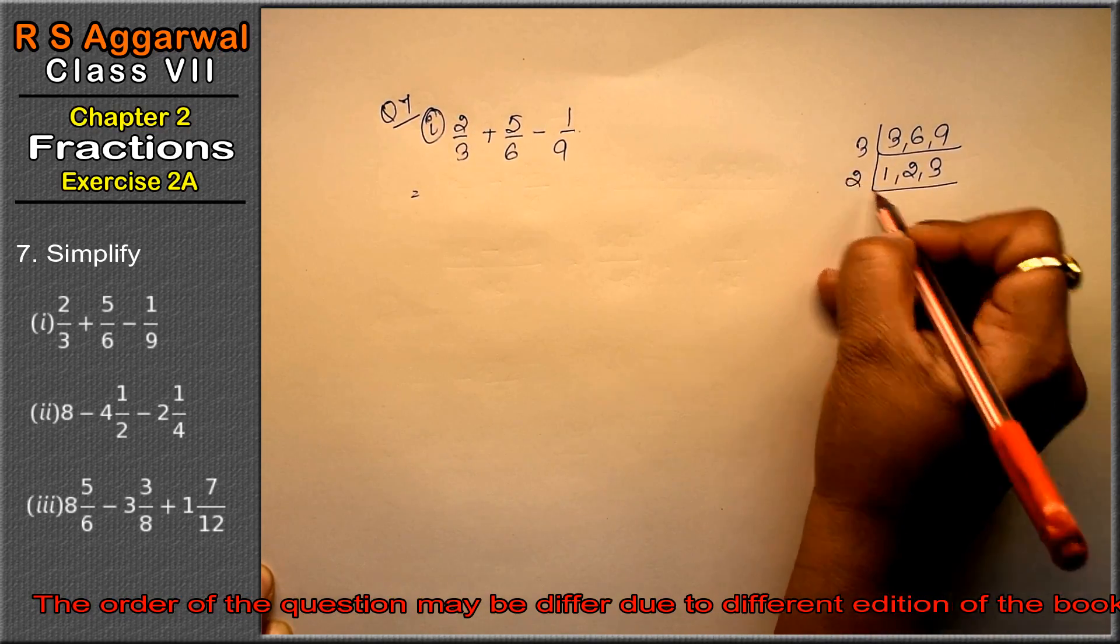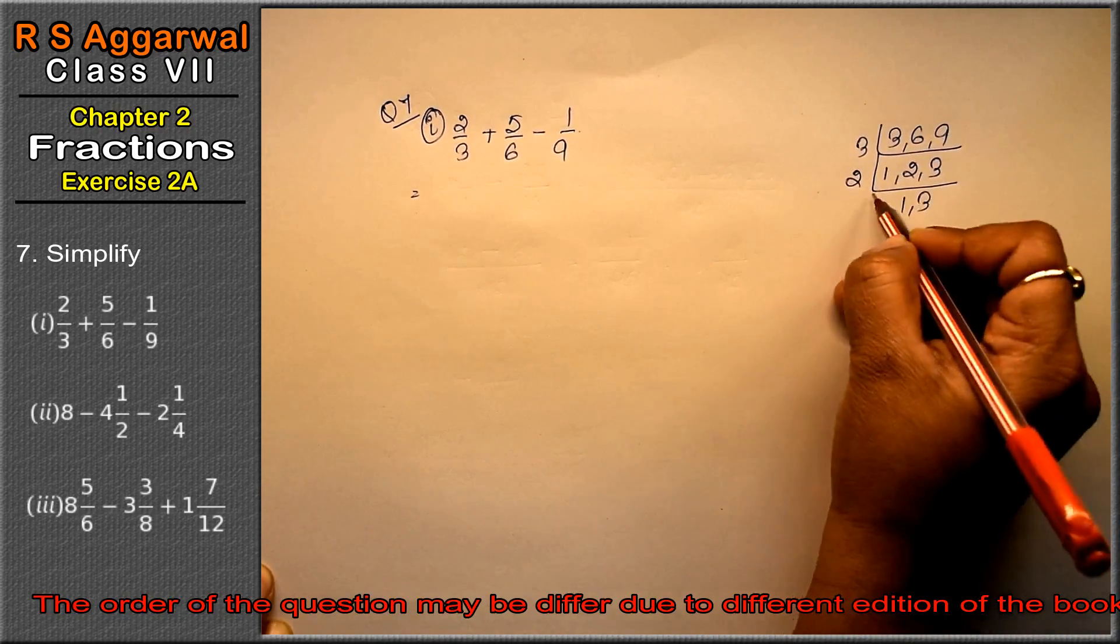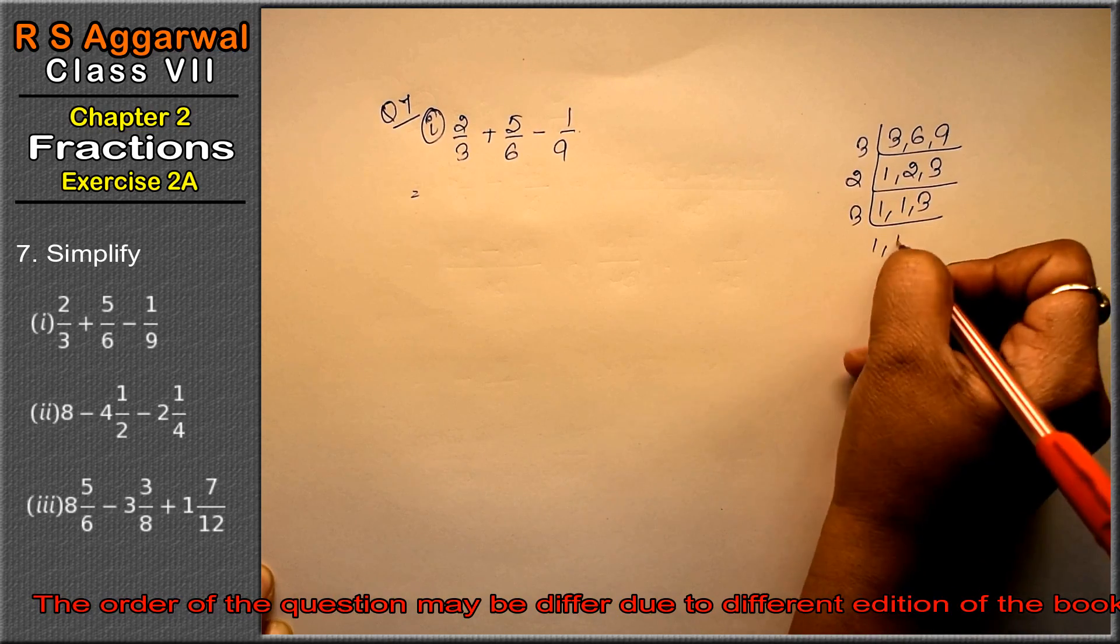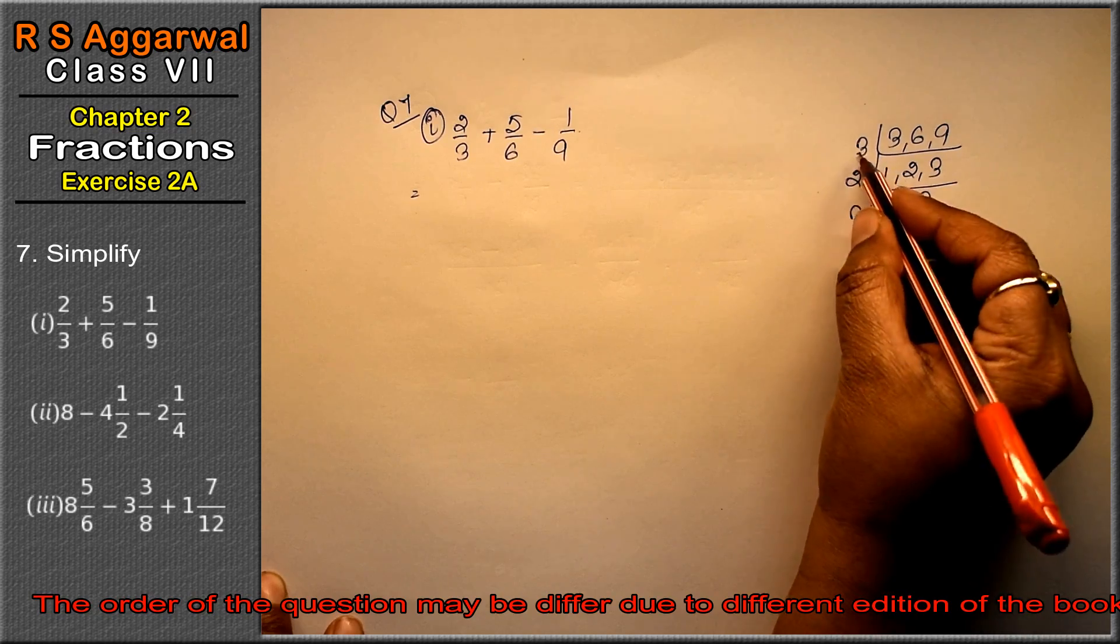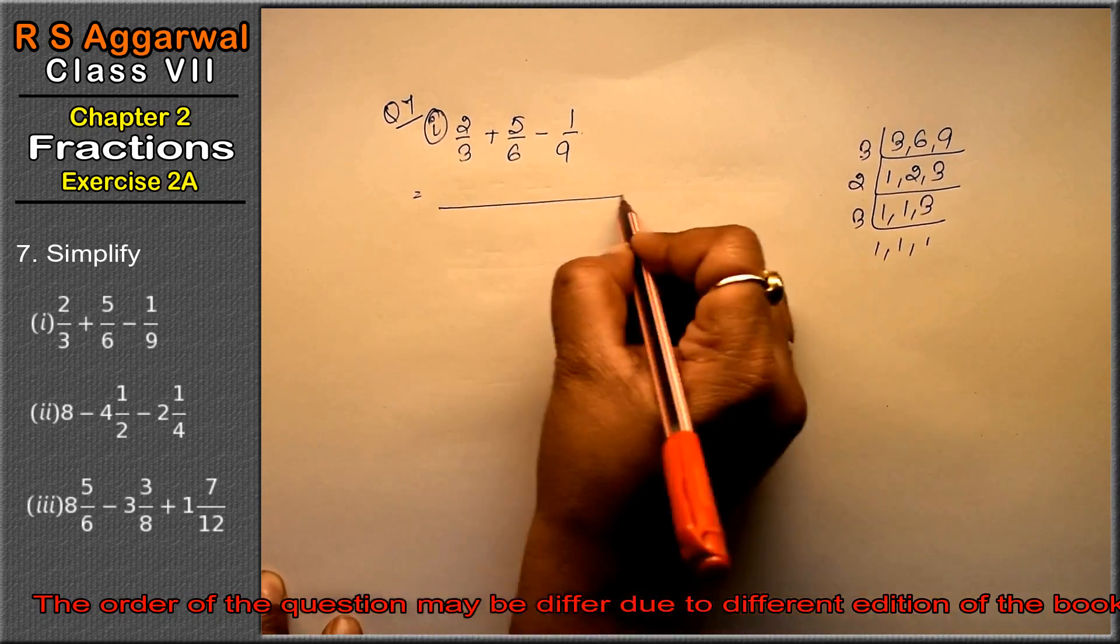So 2, 1 and 3 as it is, 3, 1, 1 and 1. Right friends? So how much is it? 3, 3 is 9. 9, 2 is 18 LCM.